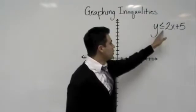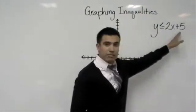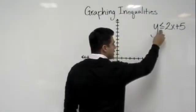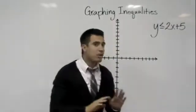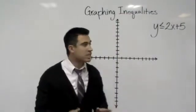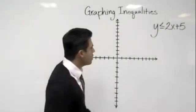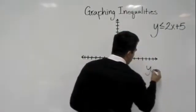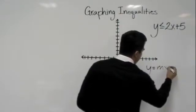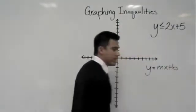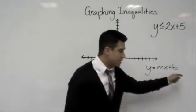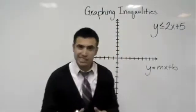Okay, we have y is less than or equal to 2x plus 5. You want to pay attention to this inequality right here, but other than that, you treat it just as if you were graphing a linear equation. How do we do that? Well, remember we've learned about y equals mx plus b, right? Where this is our slope, and this is our y-intercept. It's the same concept.